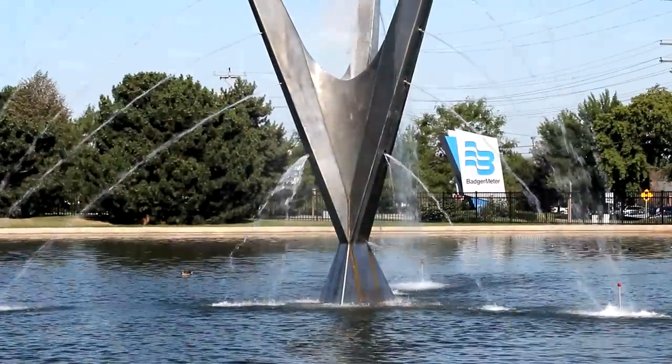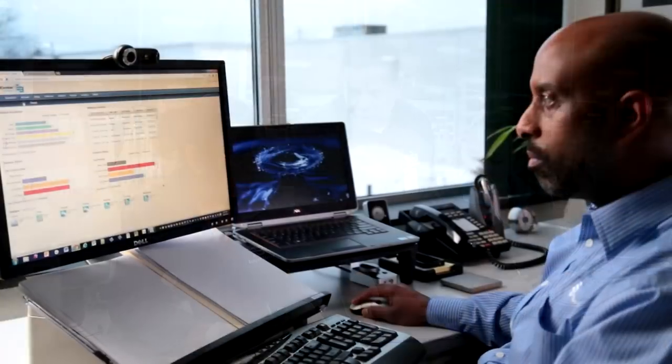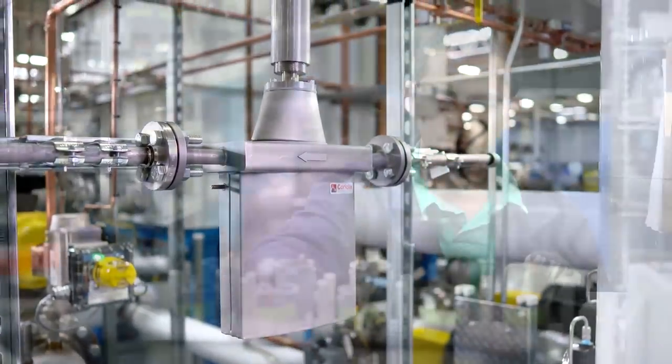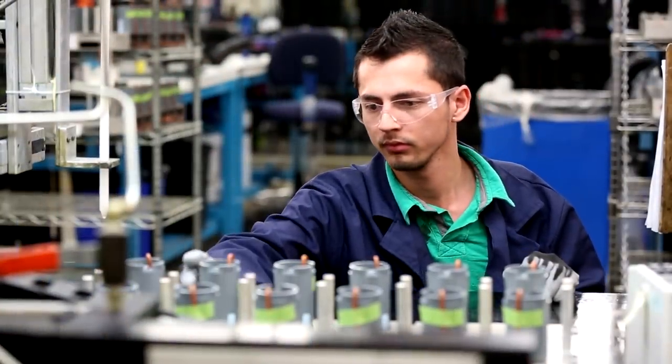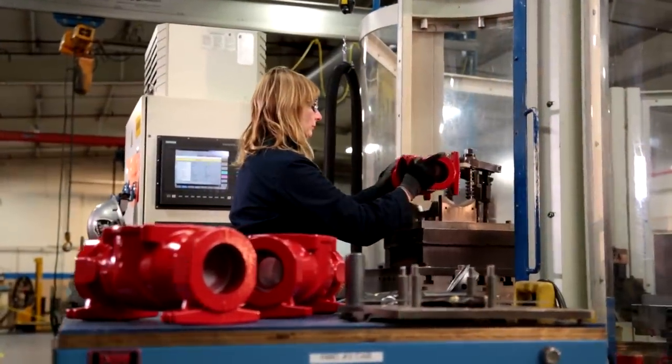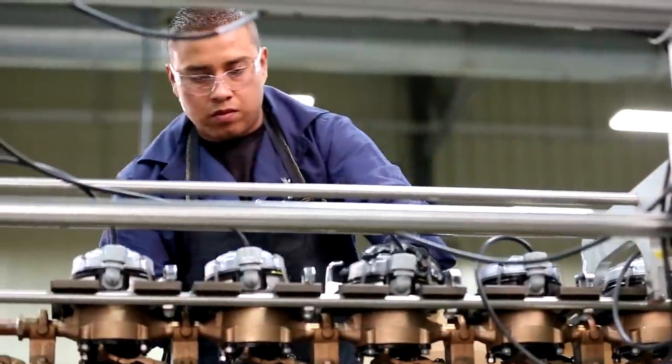At Badger Meter, we understand companies can't manage what they cannot measure. The RCT 1000 Coriolis flow system is just one of a wide variety of Badger Meter flow instrumentation technologies which meet the demands of almost any flow measurement application.